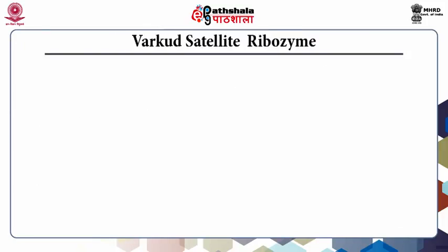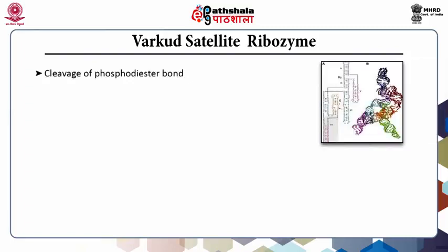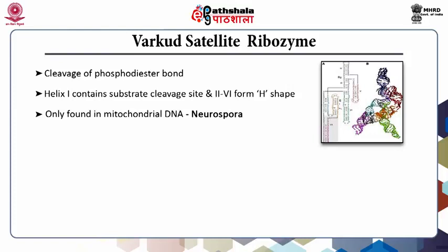The VS (Varkud Satellite) ribozyme is the largest known natural nucleolytic RNA without any available structural data and is found embedded in VS RNA. This satellite RNA is found in mitochondria of Varkud strain and some fungal strains like Neurospora. The catalytic action includes reversible cleavage and ligation by transesterification involving 2' and 5' oxygen and 3' phosphorus atoms. The active site was found to be within helix-6, and a 730 loop was found to have intimate contact with the substrate. Another residue A756 was also revealed to have direct nucleobase participation in phosphoribosyl transfer chemistry.